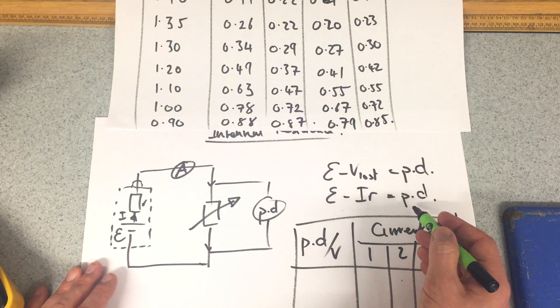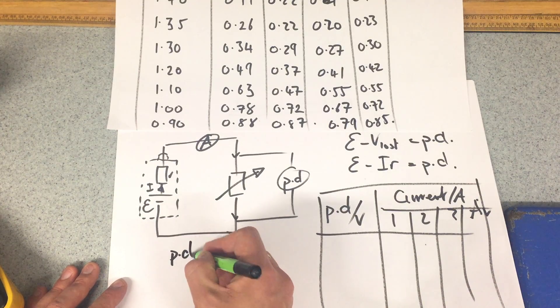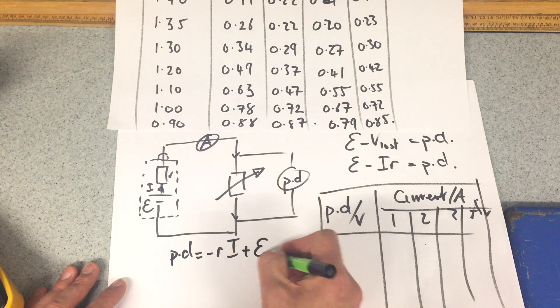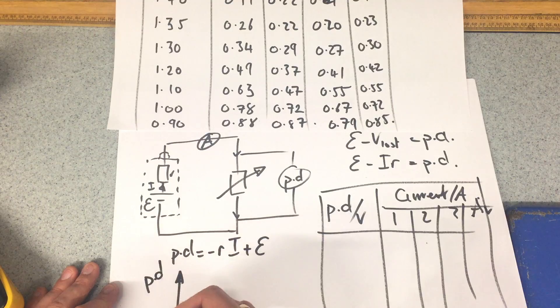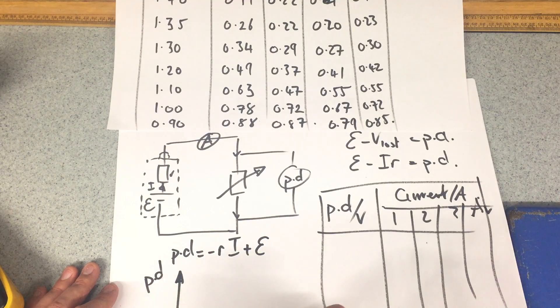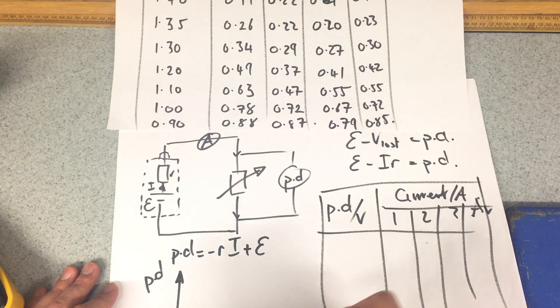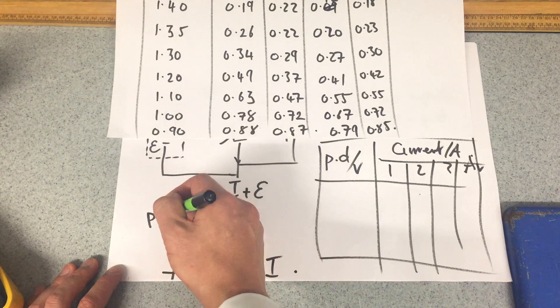Well, we know that this equation holds true, so if I rewrite it as PD equals minus R times I plus EMF, then if I were to plot my PD on the y-axis and my EMF on the x-axis—we can see that better there: PD in volts, current in amps—